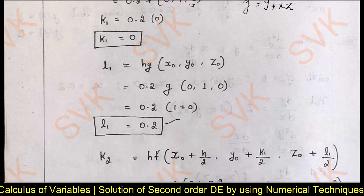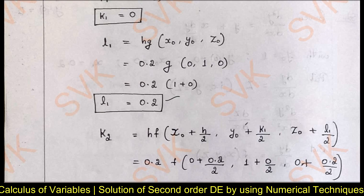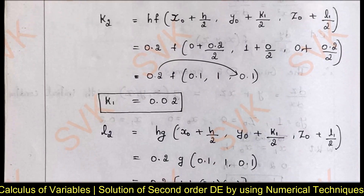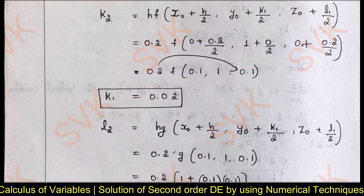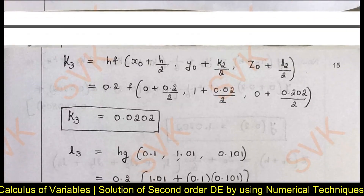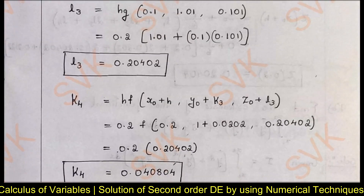Similarly, find k₂ = h·f(x₀ + h/2, y₀ + k₁/2, z₀ + l₁/2). Simplifying, the arguments become (0.1, 1, 0.1). So k₂ = 0.2 × 0.1 = 0.02. For l₂ = 0.2·g(0.1, 1, 0.1) = 0.2 × (1 + 0.1×0.1) = 0.202. Similarly find k₃, l₃, k₄, l₄.